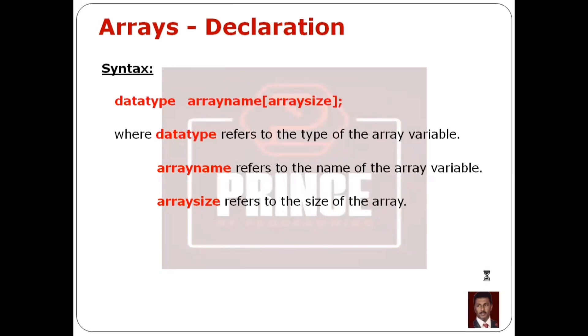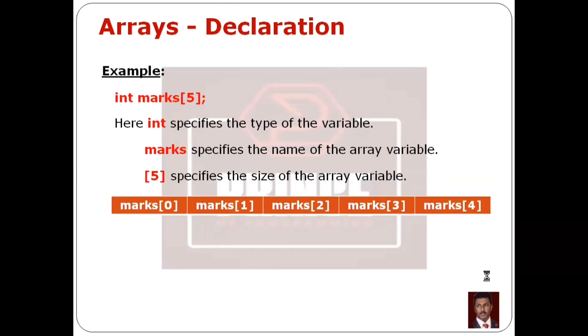We will declare an array in a C program. For example: int marks[5]. Here, int is the data type, marks is the array name, and the square bracket value 5 is the array size.